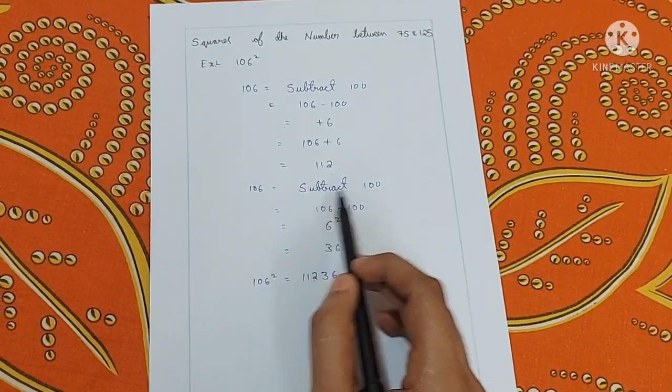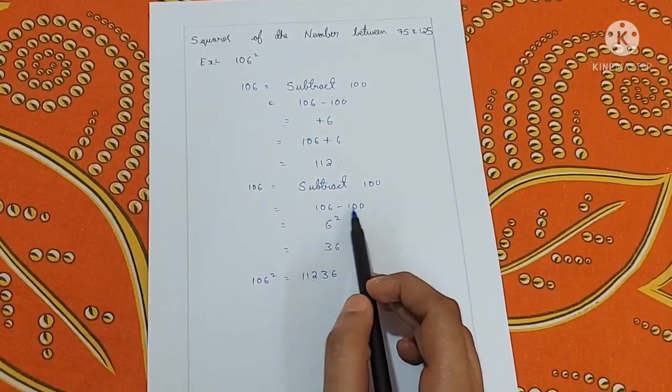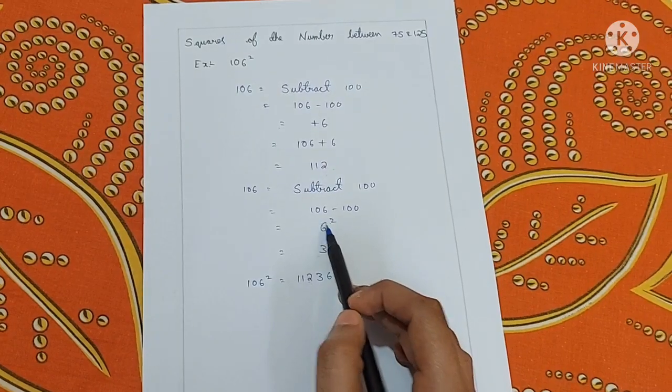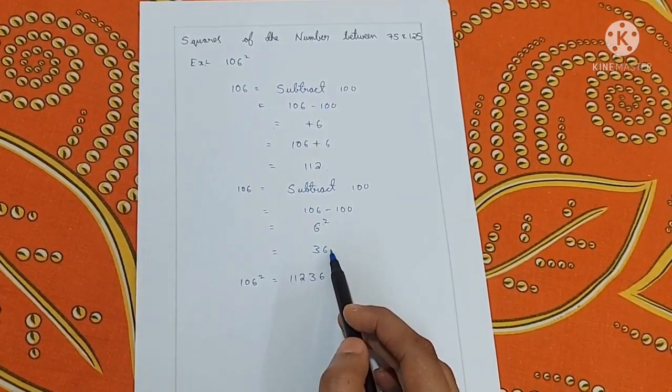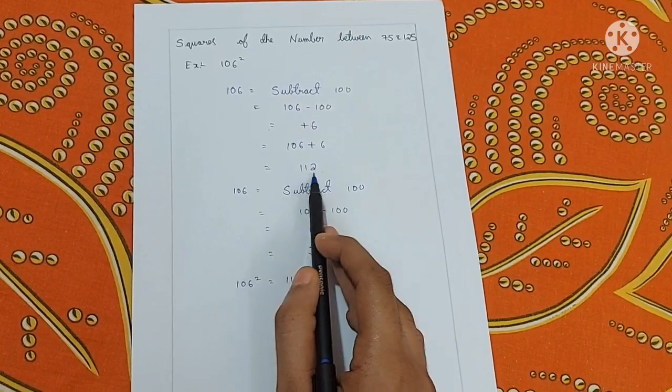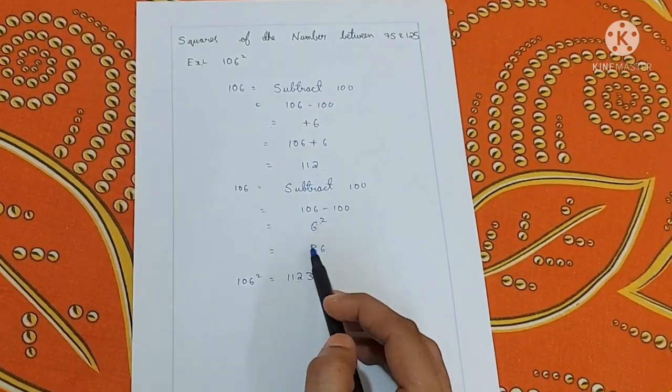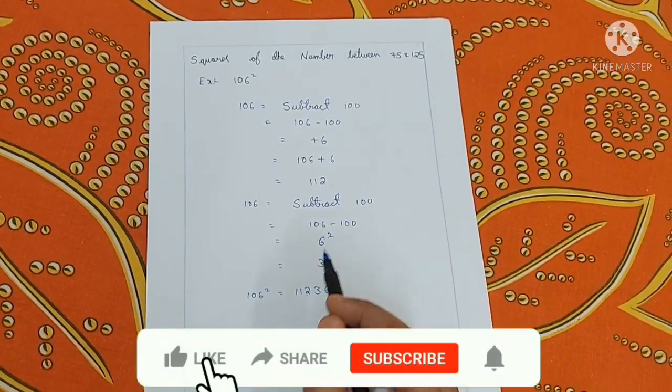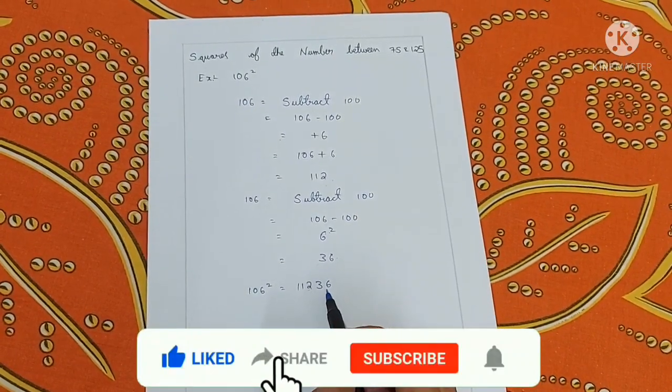The second step is subtract 100. Again, 106 minus 100 equals 6. Now take the square of the number. 6 square equals 36. Take this 112 as the first 3 digit number and 36 as the last 2 digit number, which gives 106 square equals 11236.